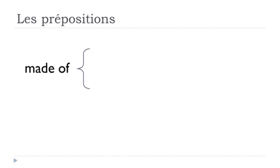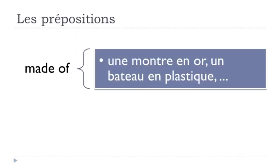We also use 'en' to introduce the material something is made of. For instance, 'une montre en or' — 'montre' is a watch and 'or' is gold, so a gold watch. Or 'un bateau en plastique' — 'bateau' is a boat, so a plastic boat.